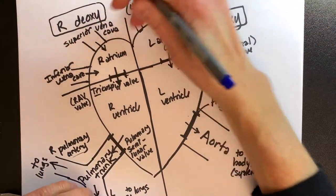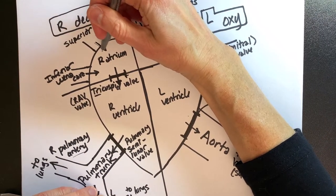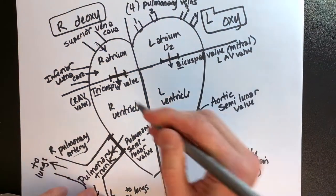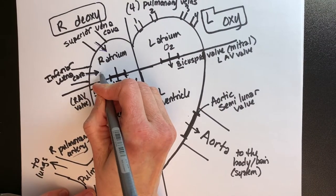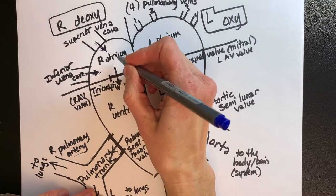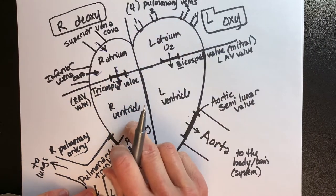Let's come in on the deoxygenated side into the right atrium. We can only come in upstairs in the heart, so we're coming in through the superior and inferior vena cava. We're going to be in the right atrium. Now we need to go downstairs to the right ventricle.